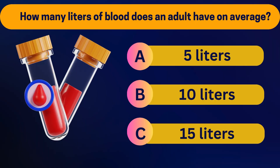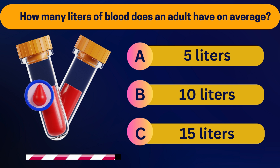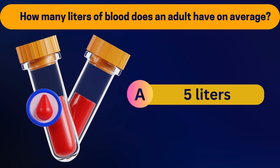How many liters of blood does an adult have on average? 5 liters, 10 liters, or 15 liters? 5 liters.